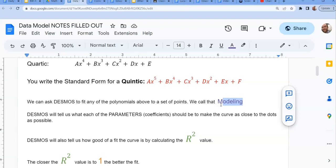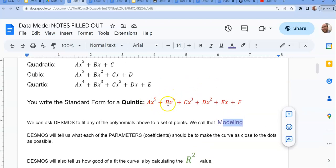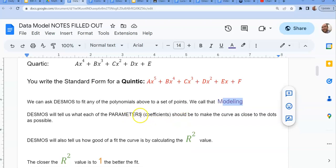Well, Desmos is going to give us all these letters up here. A, B, C, D, E, and F. It's going to tell us what numbers we should plug in there, what numbers those should be, to be as close to all of our dots as possible. We call those things as coefficients, the A, B, C, and D. We call them parameters. So you'll see on worksheets and things, I'll say write out the model using the correct parameters. That just means use the values that Desmos tells us.